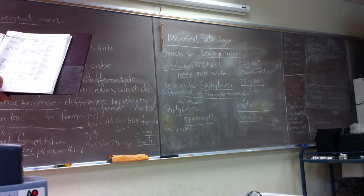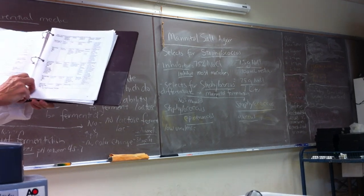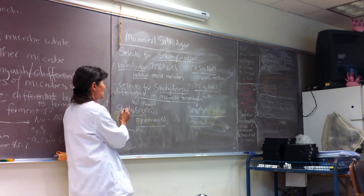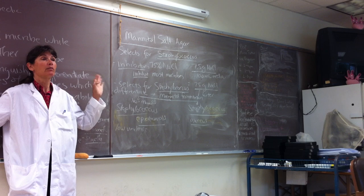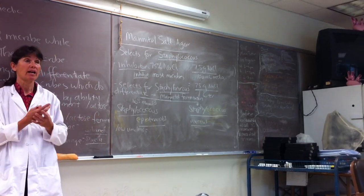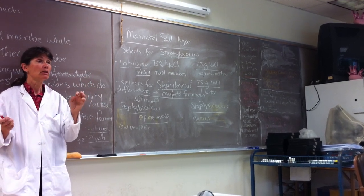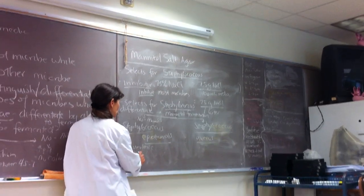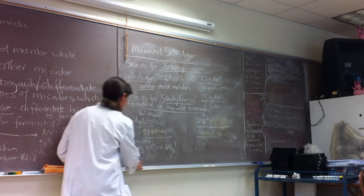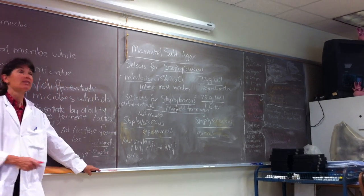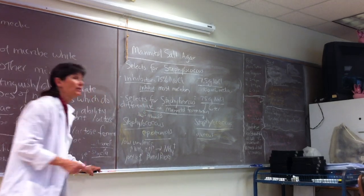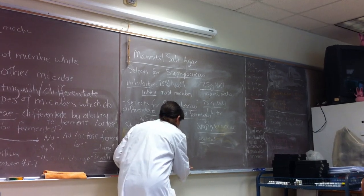Now, there's a pH indicator in mannitol salt agar. And do you guys see in the fifth column over, what is the pH indicator? Phenol red. Phenol red, right. Now, phenol red is one you probably know something about. So if we have Staphylococcus epidermidis growing on mannitol salt, it can't ferment the sugar alcohol mannitol. So it turns to the proteins and does what to the proteins? Tears them apart. It's going to use the amino acids as a source of carbon and energy. What happens when an amino acid gets torn apart? The amino group gets released as what? As ammonia, right? And we know ammonia acts as a weak base, right? It can combine with hydrogen ions to make ammonium, right? So what's going to happen to the pH? Will it go up or down? It's going to go up, right? And what do we know about phenol red at alkaline pH? Alkaline pH, phenol red is which color? Red.